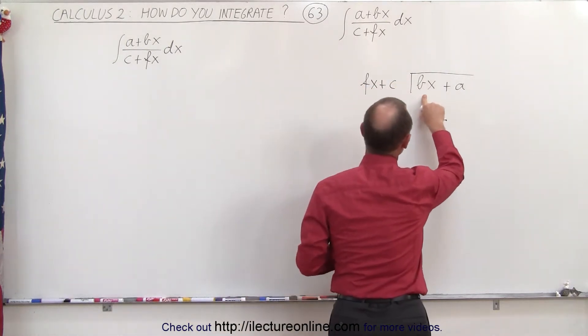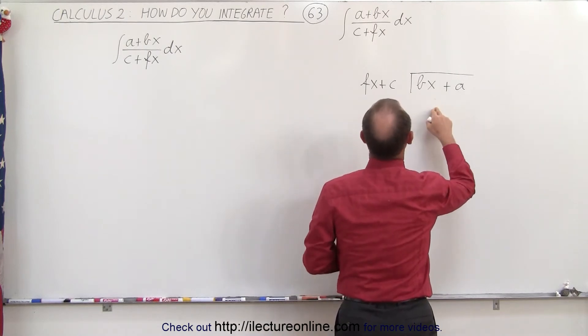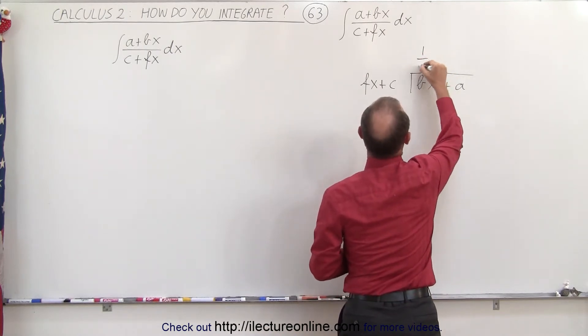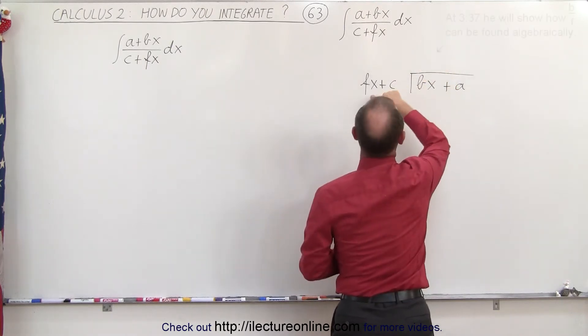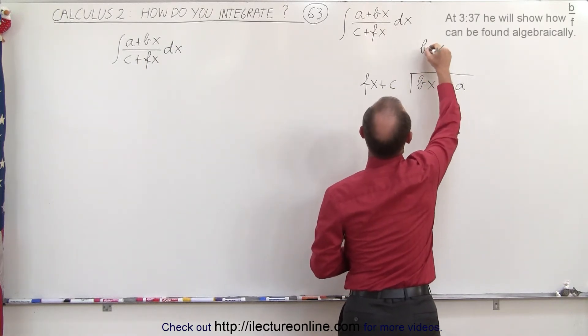Now, fx will go into bx how many times? Well, let's see here. How about 1 over b, or maybe, let's see, this times this gives us this, so we need b over f. That's what we need.